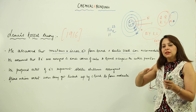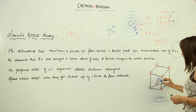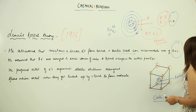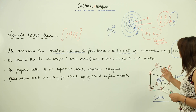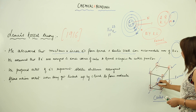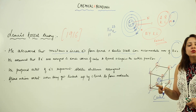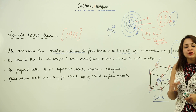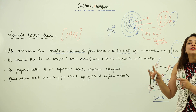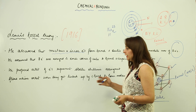To explain why the outer shell holds eight electrons, Lewis used the cube model. He said suppose we have a cube — the kernel occupies the central position, meaning the nucleus and inner shell electrons are at the center. Since a cube has eight corners, the maximum number of electrons in the outermost shell equals the number of corners, which is eight.